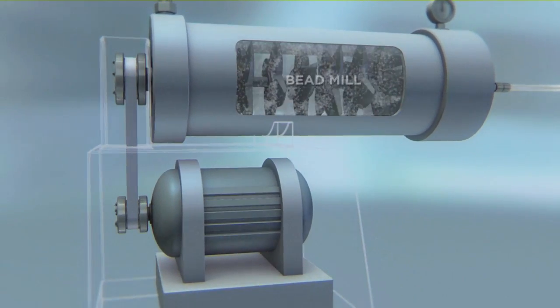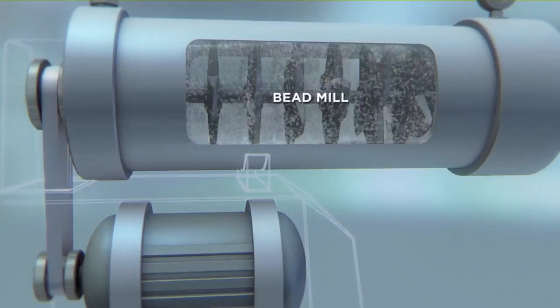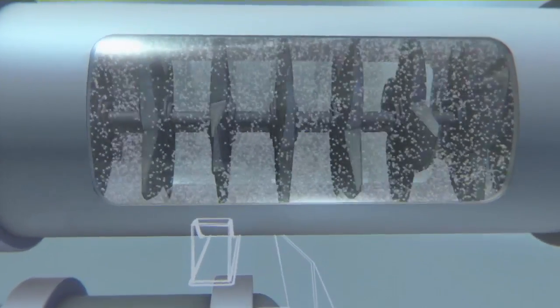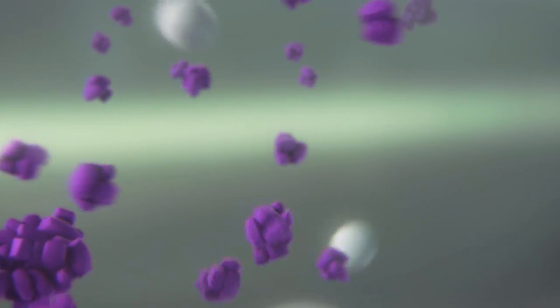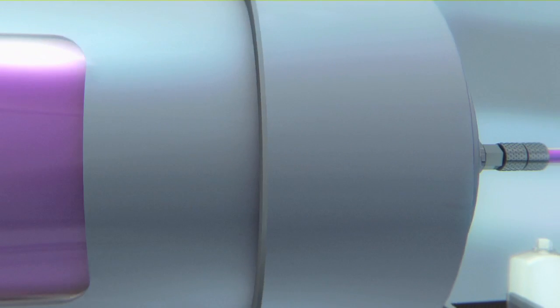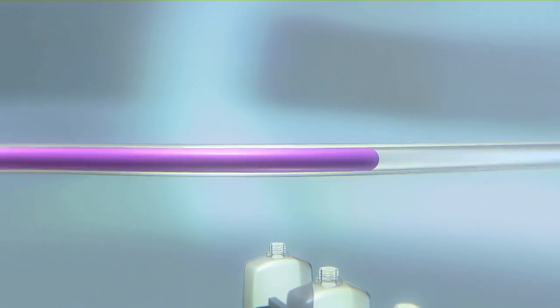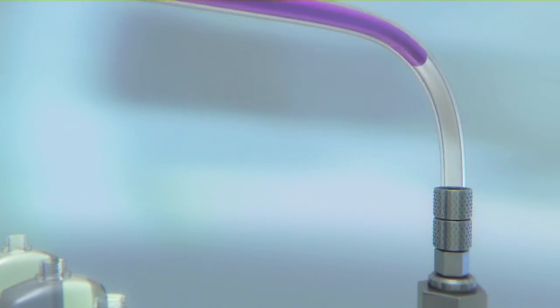This task is performed by the bead mill. Millions of tiny milling beads break up the clumped pigments in a process lasting several hours. After the milling process, the beads remain in the mill. The resulting product is the dispersed pigment preparation.